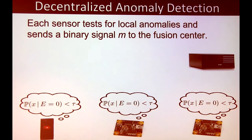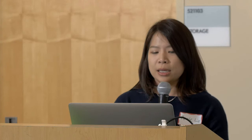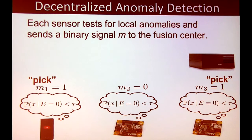Our approach is to do simple processing at the sensor level: compute the probability of whether an event has occurred, and if we think it has, send a binary 'pick' or 'no pick' to the centralized server. At the server, we again do hypothesis testing, but on these pre-processed binary signals rather than raw data. This can cut down our traffic by a factor of thousands or more.